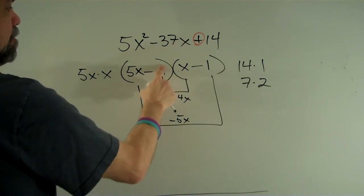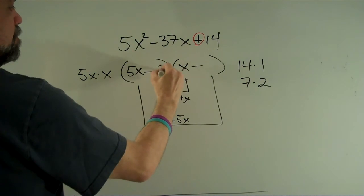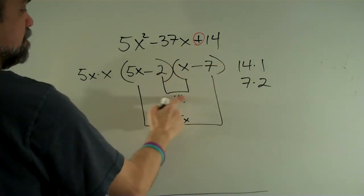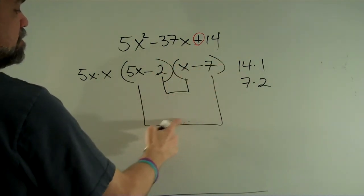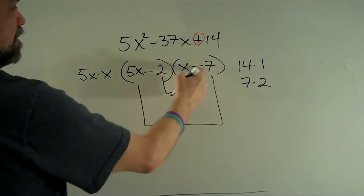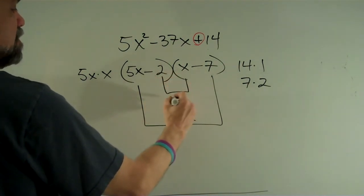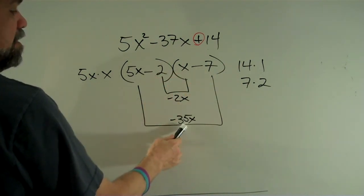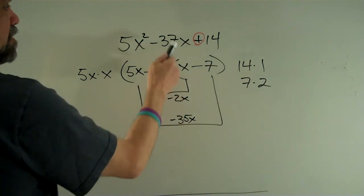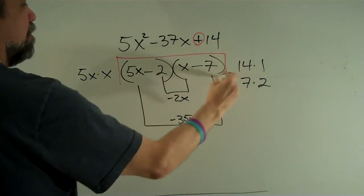Alright, so let me try 2 and 7. Okay, that's looking pretty good because 5x times 7, or times negative 7, pardon me, is negative 35x. And negative 2 times x is negative 2x. Negative 35x minus 2x is negative 37x. And we have found our answer.